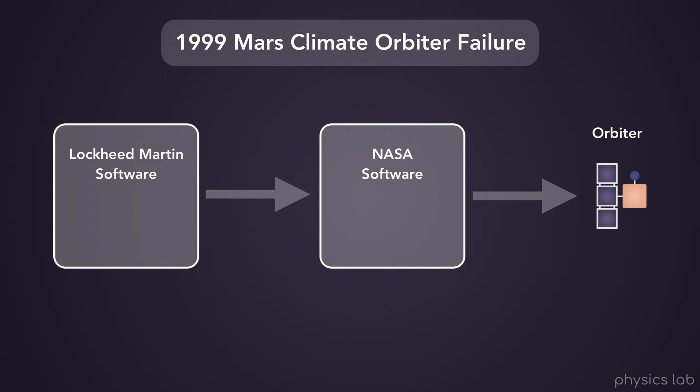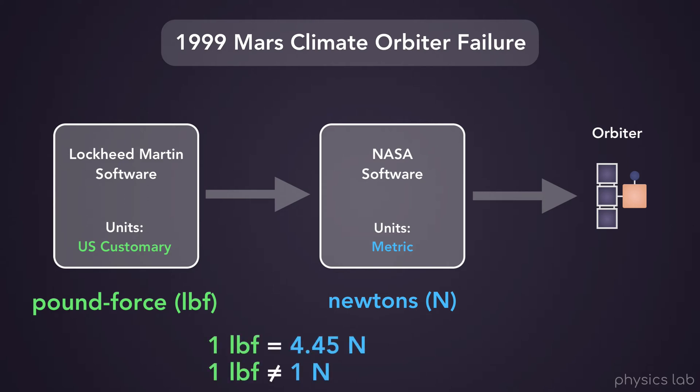And one piece of software from Lockheed Martin that sent data to software used by NASA caused the problem. The reason was that the two pieces of software were using different units. The short version is Lockheed Martin was sending numbers in units of pound force, which is a US customary unit, but NASA was expecting them to be in newtons, which is a metric unit. One pound force equals 4.45 newtons, so NASA sent instructions to the orbiter that were off by a factor of 4.45.